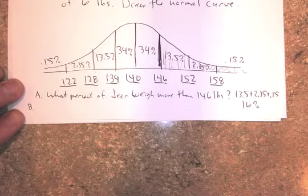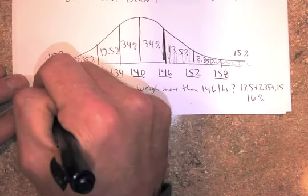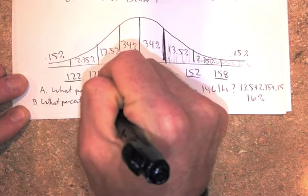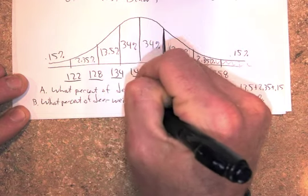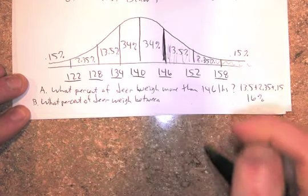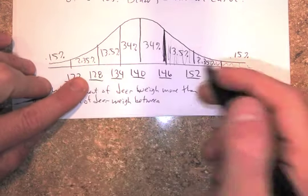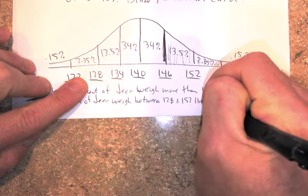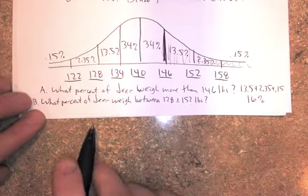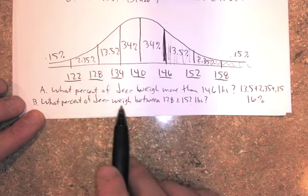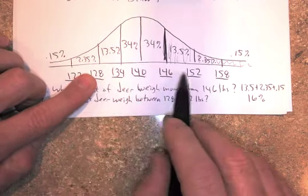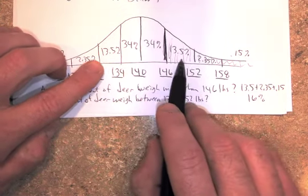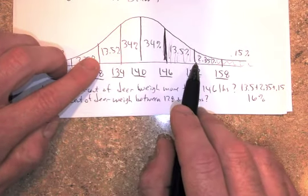One other question may be something like this. What percent of deer weigh between, let's pick two, between 128 and 152 pounds? Hopefully you can read this. Sorry, it's getting kind of little. What percent of deer weigh between 128 and 152? So I'm looking here, 128 to 152. Well, I've got to go all these ones in between. All the percents in between I've got to add up.